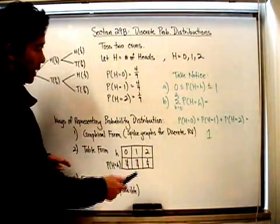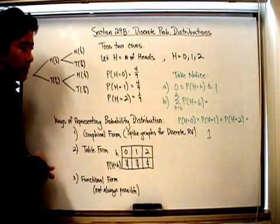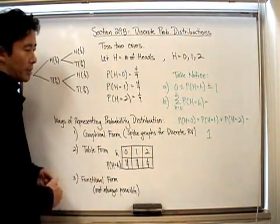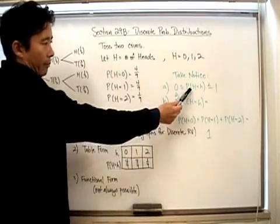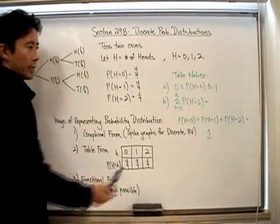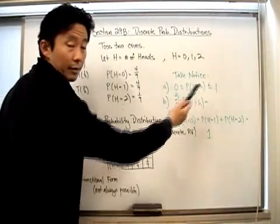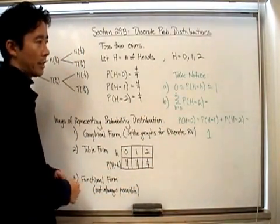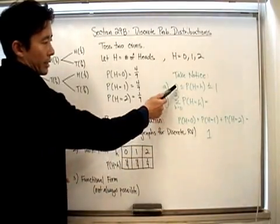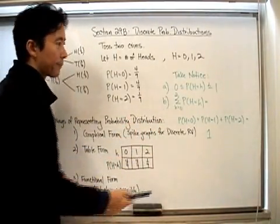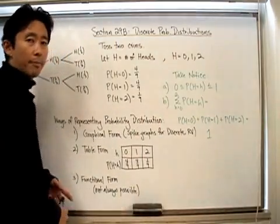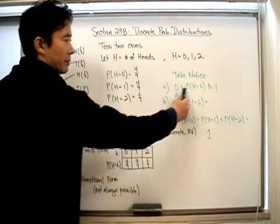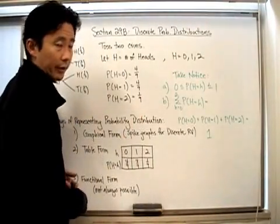Let's take a look at some important things that you should take notice with regards to the probability distribution. Every single probability that you have is always going to be between zero and one. That's nothing different from what we did before with simple probability, because we know that if the probability is zero, then it's never going to happen. And if it's equal to one, then it's always going to happen. The only possibility for the probability is to be between those two or equal to those two values.